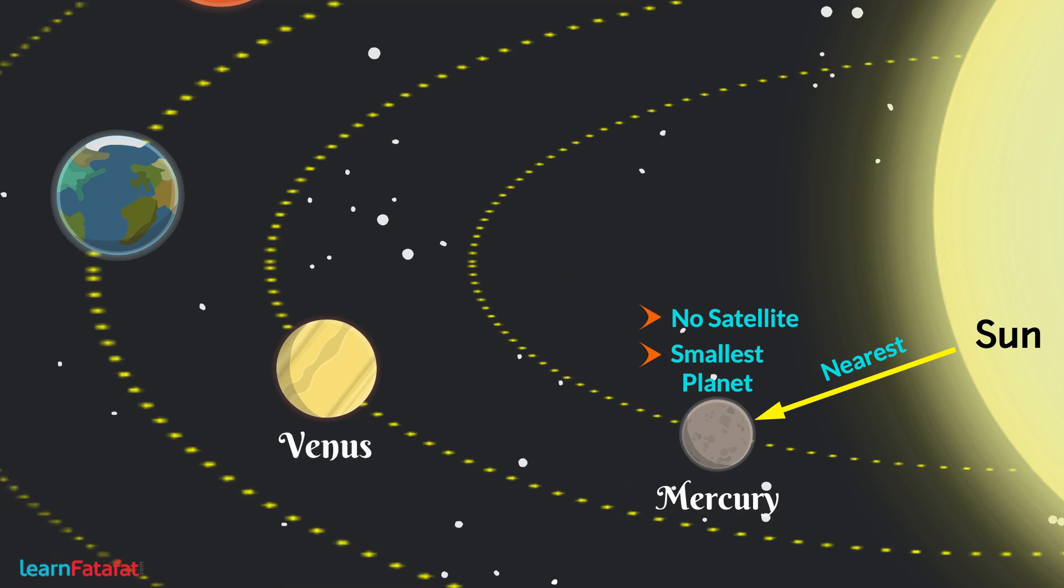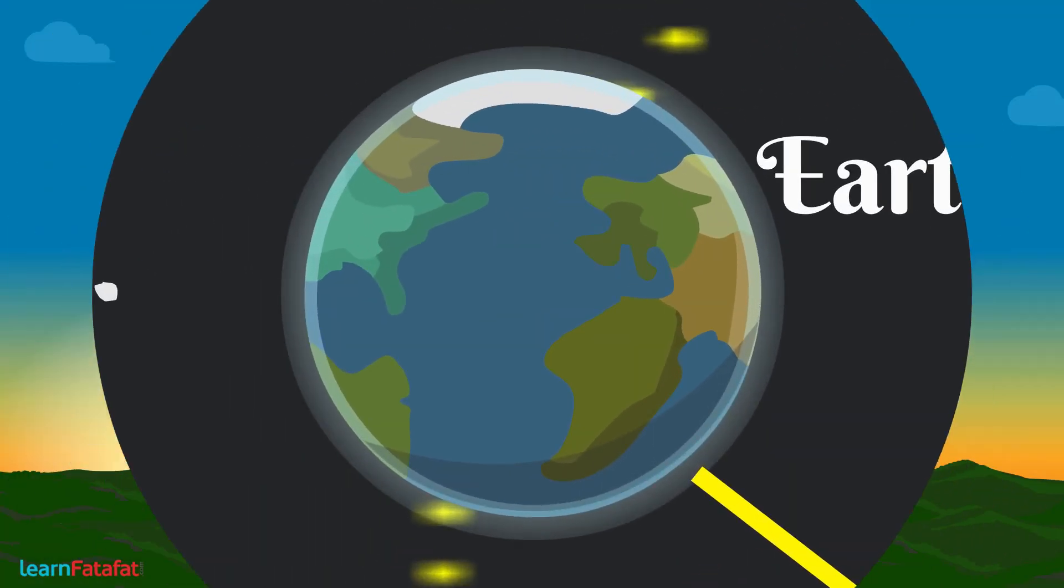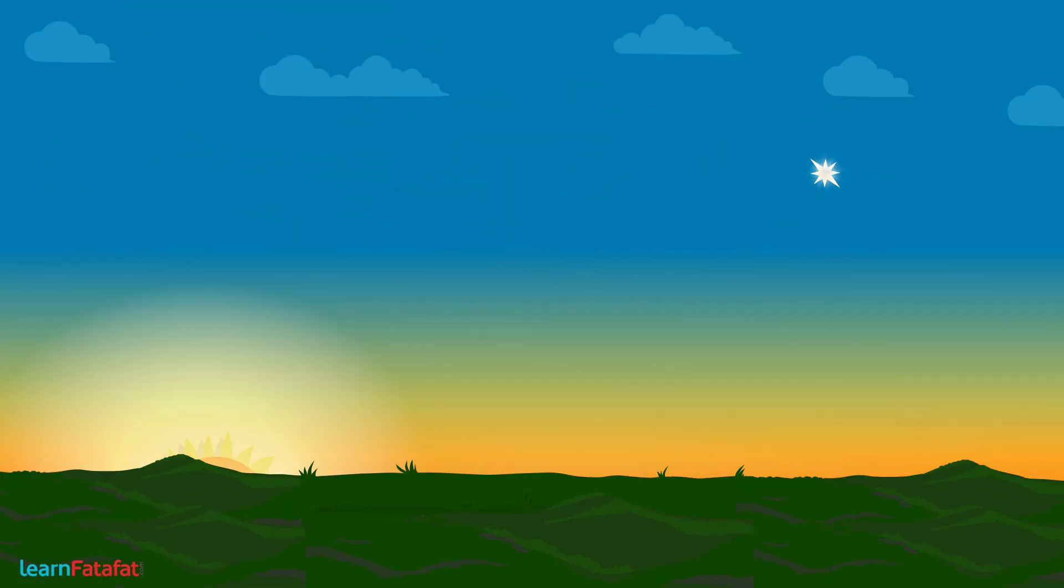Venus. The brightest planet in the sky is Venus. It is the nearest planet from Earth. Since it appears in the eastern sky before sunrise, it is also called the morning star.